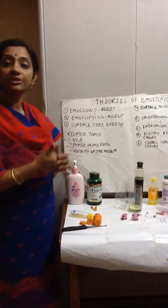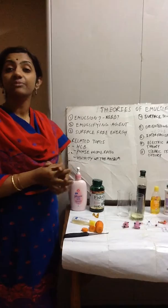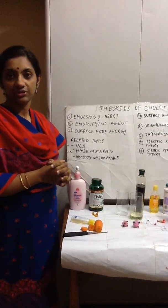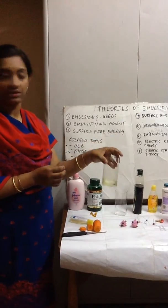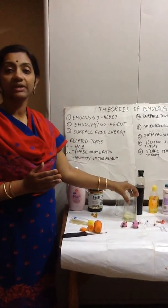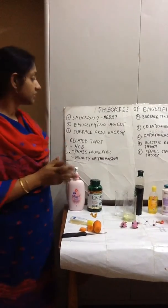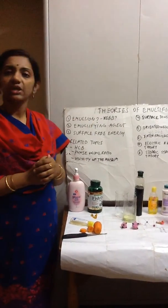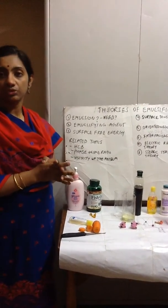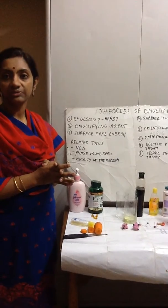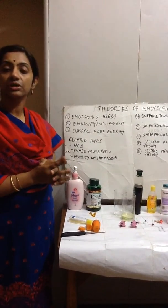To continue the definition further: one phase distributed in the other, stabilized by an emulsifying agent. To keep the oil globules separate from each other and prevent coalescence, you require an emulsifying agent. There are many types of emulsifying agents — those used for oral use include certain gums and hydrocolloids, and for topical use you are using surfactants.